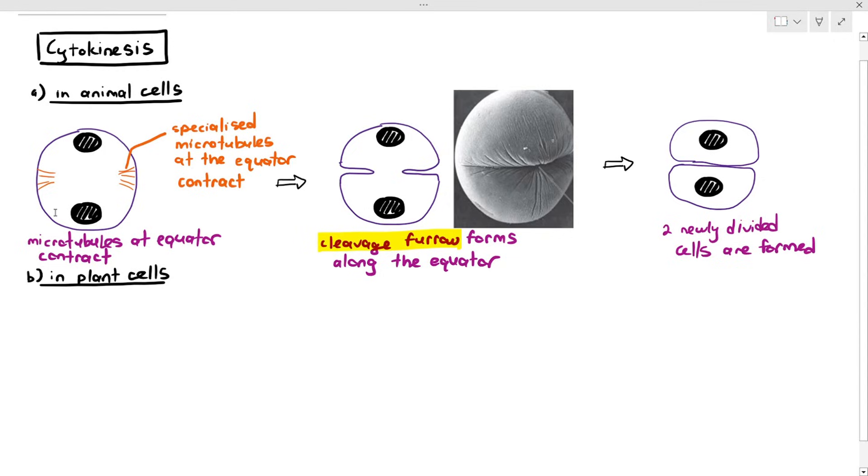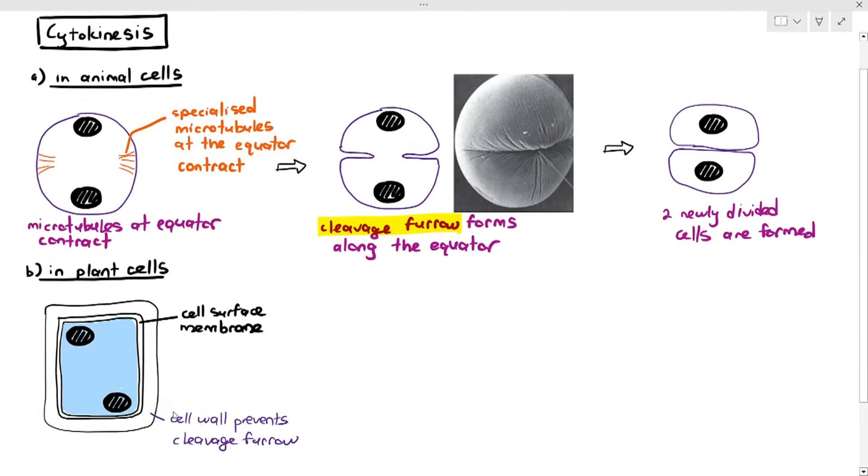However, in plant cells, there is a difference. You have the plant cell with two nuclei on opposite poles. But the problem is they cannot form the cleavage furrow easily because of the presence of the cell wall. Even if the protoplast - the cell surface membrane and the cytoplasm - can form the cleavage furrow, it is not sufficient because the cell wall needs to split as well.